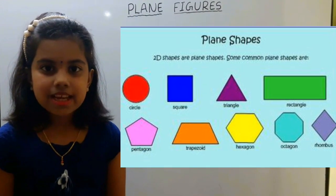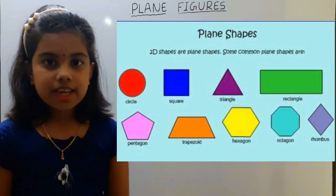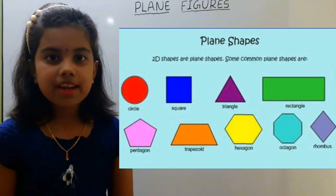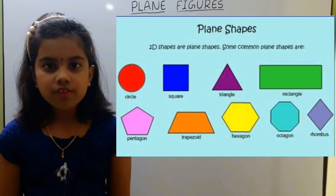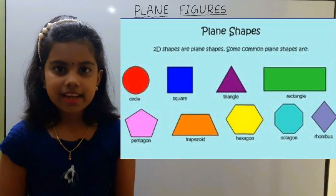Next we discuss plane figures. Shapes drawn on a plane are called plane figures. Plane figures are formed by curved lines or straight lines.